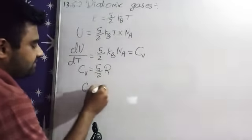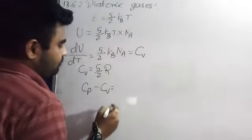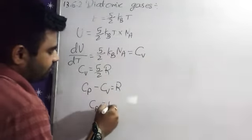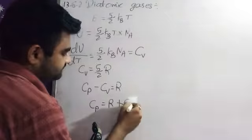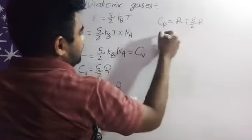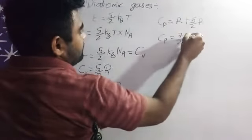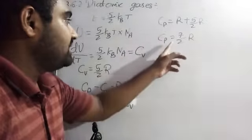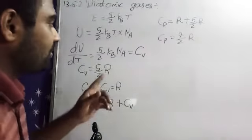Again we are having one equation, Cp minus Cv is equal to R. Put this formula here, Cp is equal to R plus Cv. So Cp is equal to R plus 5 by 2 into R, it will be 7 by 2 into R. So that is Cp and that is 7 by 2 into R.